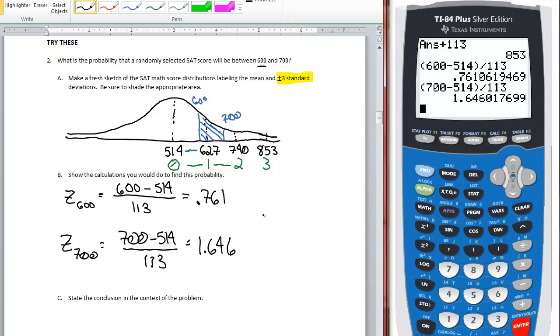And so this makes us happy. This z-score, this z-score is between 0 and 1. This z-score is between 1 and 2. In fact, it's about halfway like we estimated it to be. And so that really makes us happy because we've done those calculations correctly.